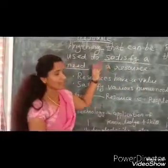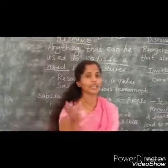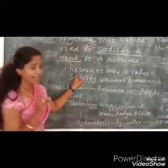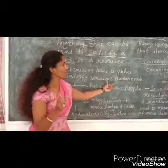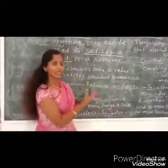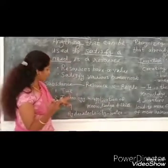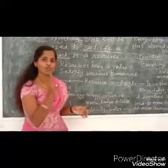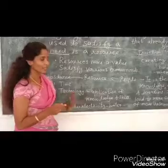Let us revise what we have learned. Anything that can be used to satisfy a human need is known as a resource. Resources have a value and satisfy various human needs — those are the two conditions. When a substance is converted into a resource, there are two factors: talent and technology. Technology is the application of knowledge and skill.